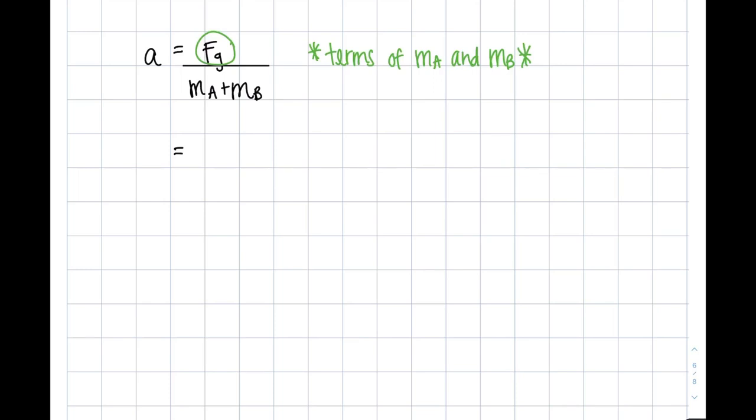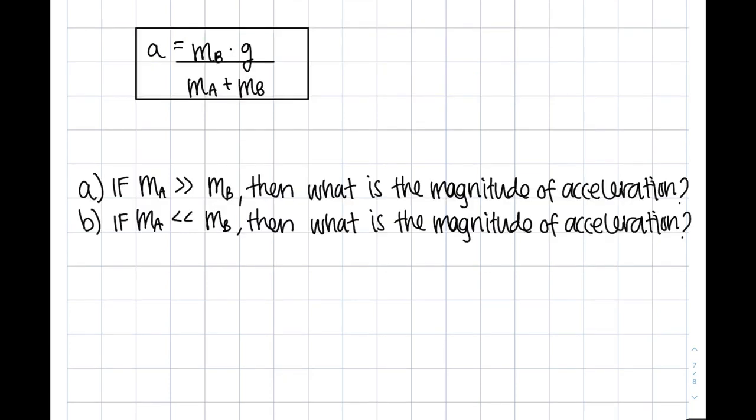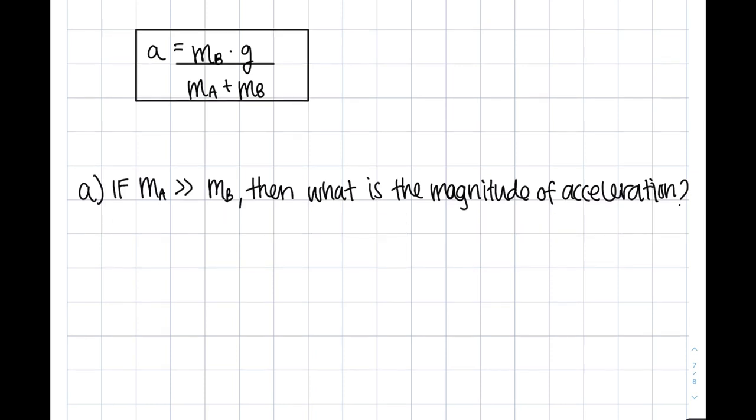But remember, we are being asked to find acceleration in terms of mass A and mass B. So always double check if you can further simplify or expand depending on your perspective any further. In this case, we could. Force of gravity of block B is the same as mass B times gravity. So now, what if we tried to use this formula to answer questions A and B? Let's start with A. It states that mass A greater than mass B. So mass B is so small that we're going to consider it zero. We'll substitute zero for all the mB's. Zero over a number is just zero. And this aligns with how we initially answered A.